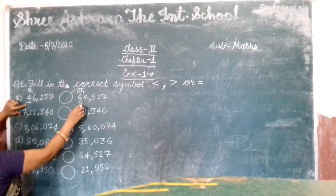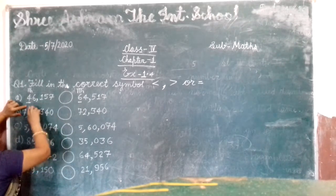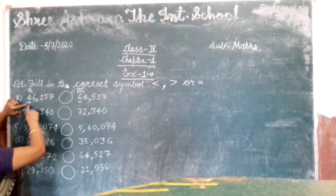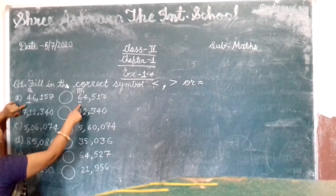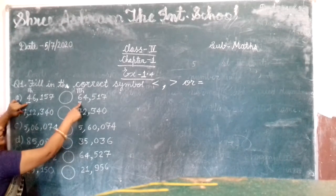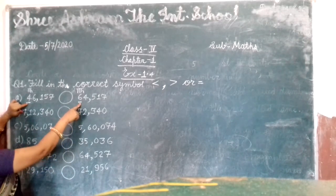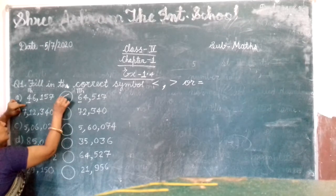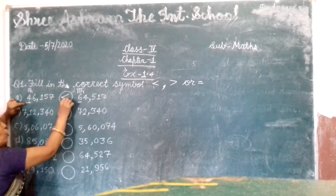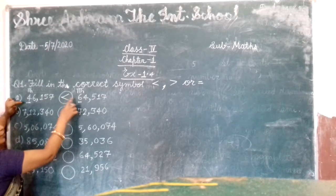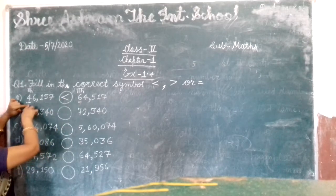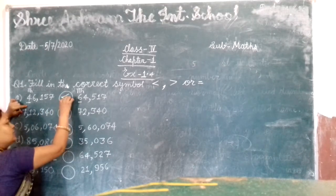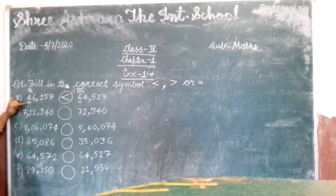Then we start comparing the first digit of both numbers. Four and six — which one is greater? Six is greater. So the open mouth of the symbol is towards the greater number and the closed side towards the smaller number. We use this symbol here.